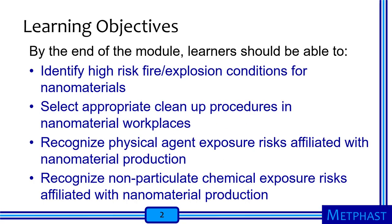The learning objectives are that by the end of this module, learners should be able to identify high-risk fire and explosion conditions for nanomaterials, select appropriate cleanup procedures in nanomaterial workplaces, recognize physical agent exposure risks affiliated with nanomaterial production, and recognize nonparticulate chemical exposure risks affiliated with nanomaterial production.